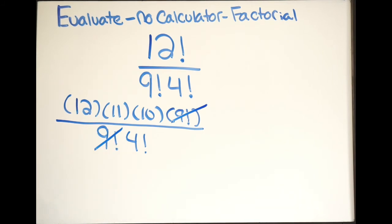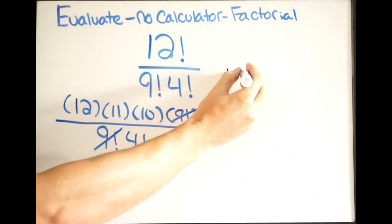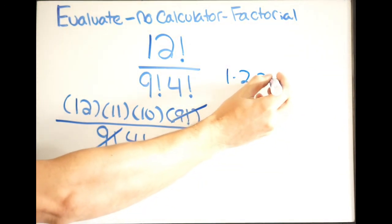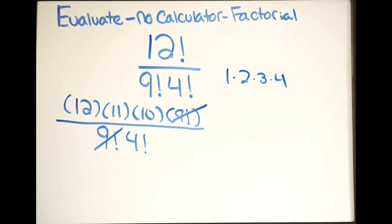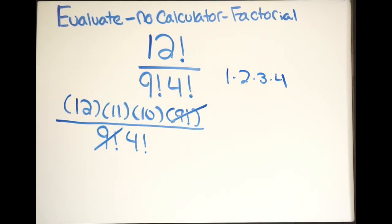So let's look at 4 factorial. How can we expand this out? Well, again, that's just going to be 1 times 2 times 3 times 4. Again, I can multiply in any order here. So look, I have a 12 in my numerator. If I do 3 times 4, that's also 12. So I'm going to rewrite this the following way.